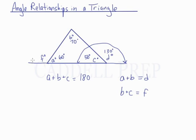So if this is 180 degrees and this is 60, that means F is 120. And we see that F, 120, equals B plus C, 70 plus 50, that equals 120.